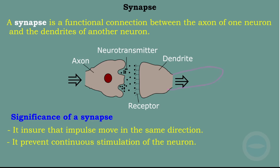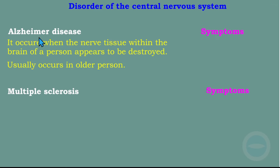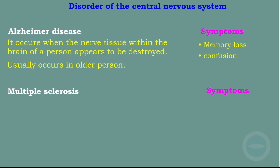Now the disorders of the central nervous system. We have Alzheimer's disease and multiple sclerosis. Alzheimer's disease occurs when the nerve tissue within the brain appears to be destroyed — when cells of the brain are destroyed. It usually occurs in older people. The symptoms of Alzheimer's disease are memory loss — they forget very easily — and confusion.